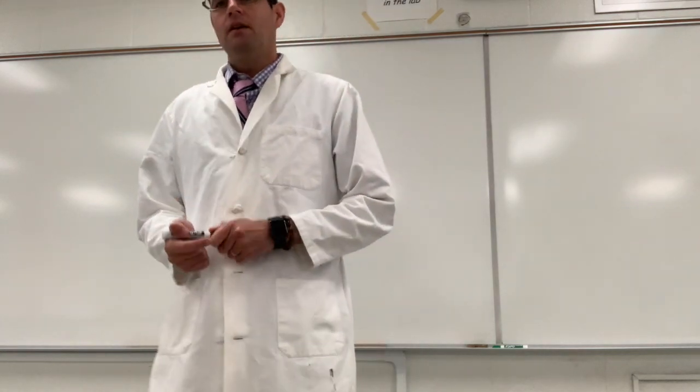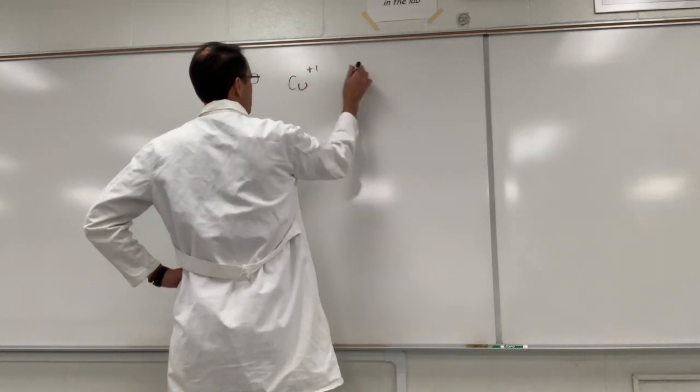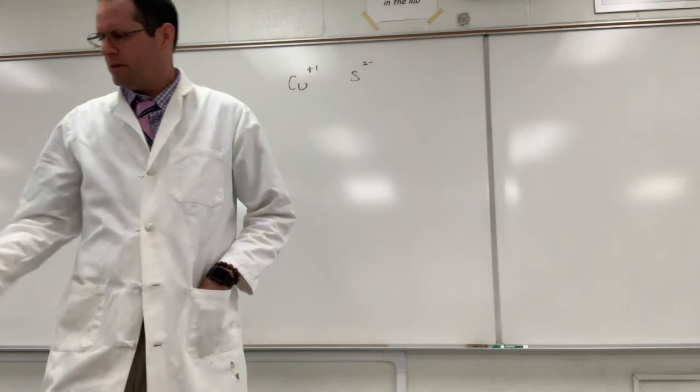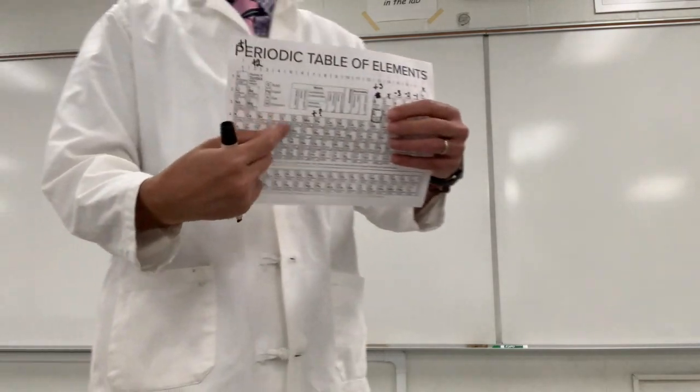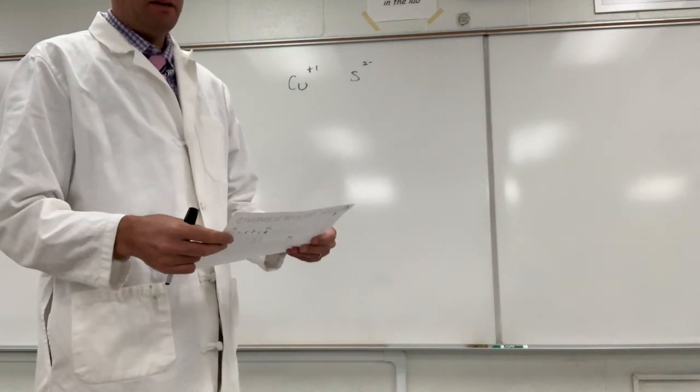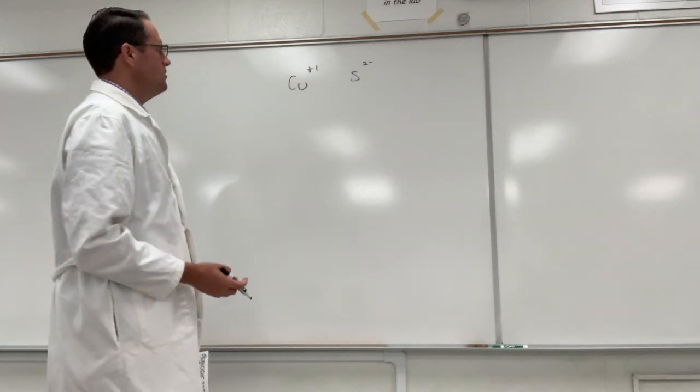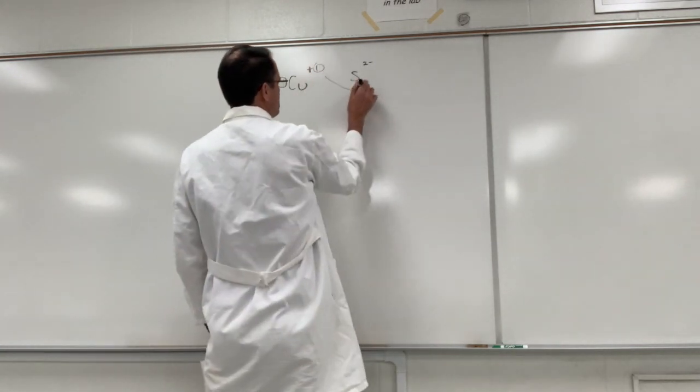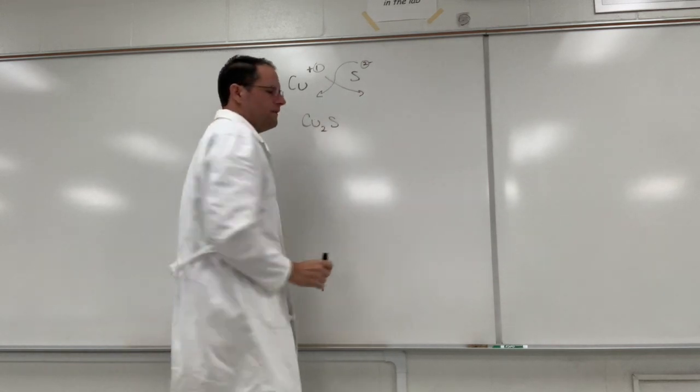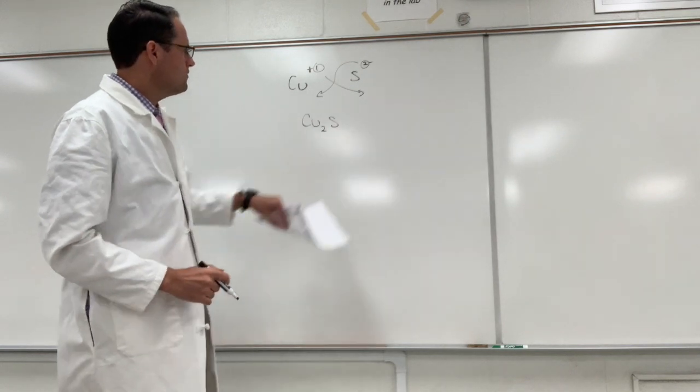So copper sulfide is an ionic compound. Copper is located in the transition metals and sulfur is in group 6 of the periodic table. And if copper(I) sulfide forms from this chemical reaction, the empirical formula or simple formula should be copper with a 2 and sulfur, Cu2S.